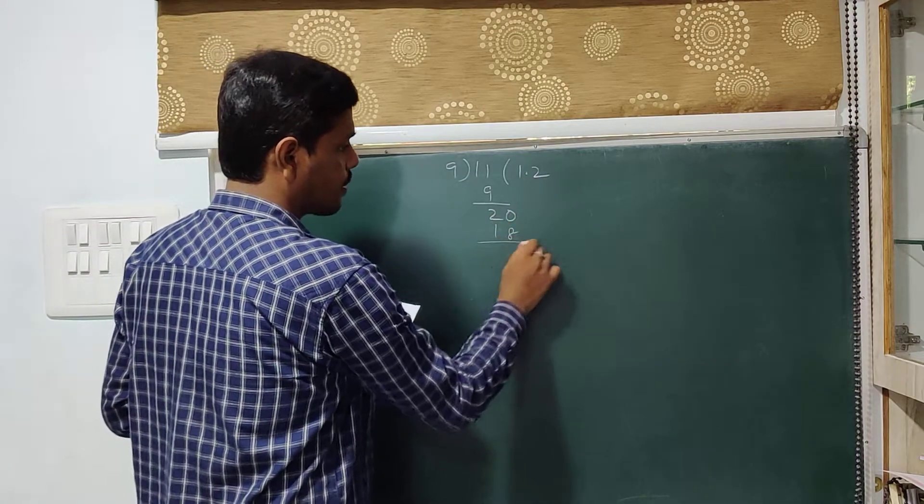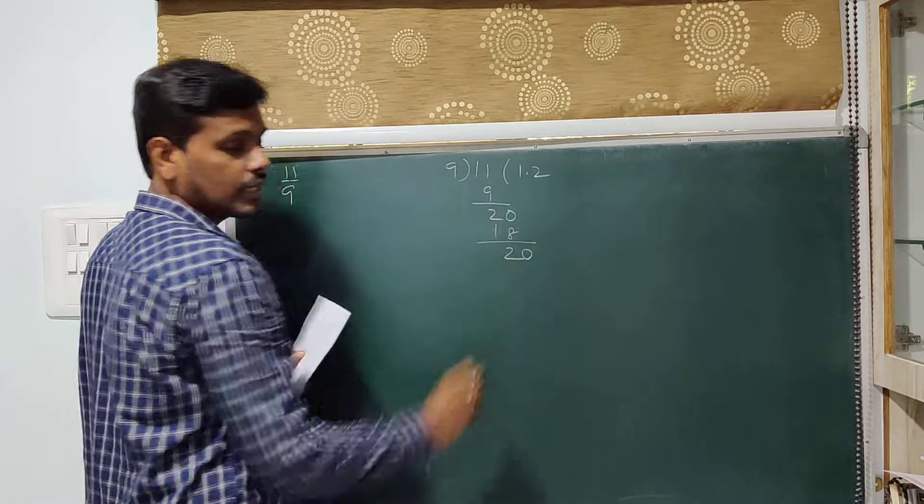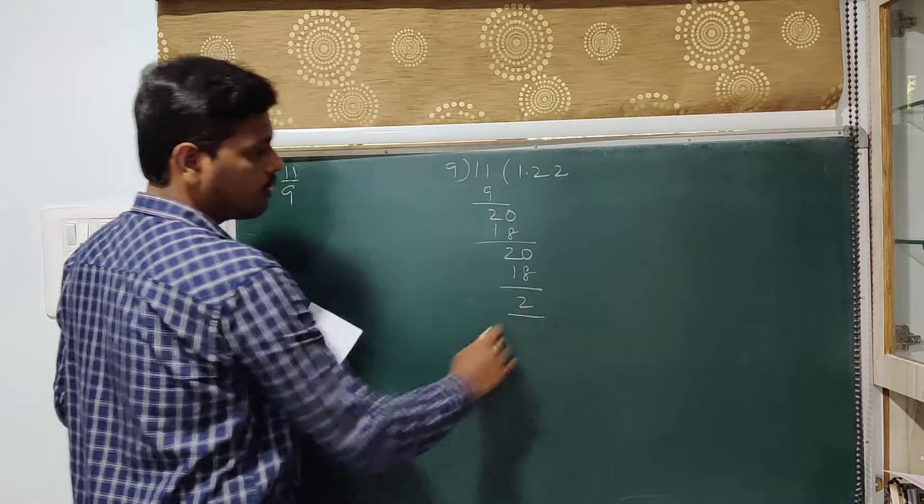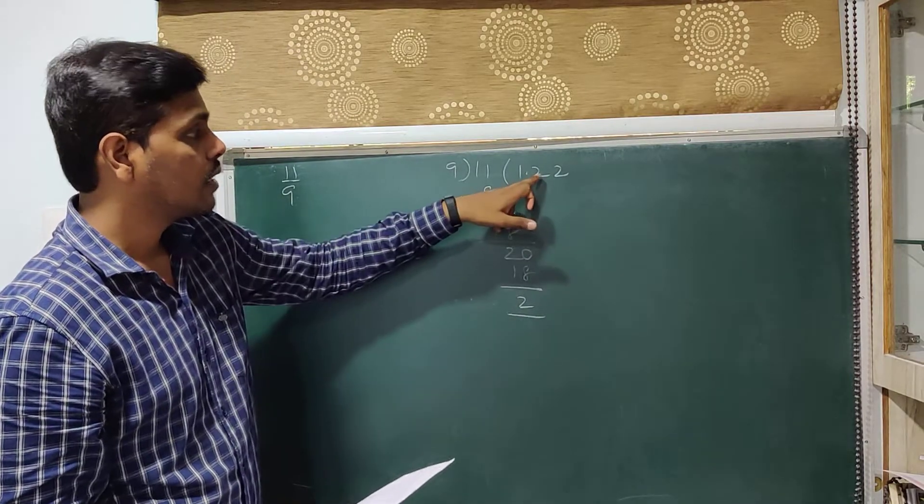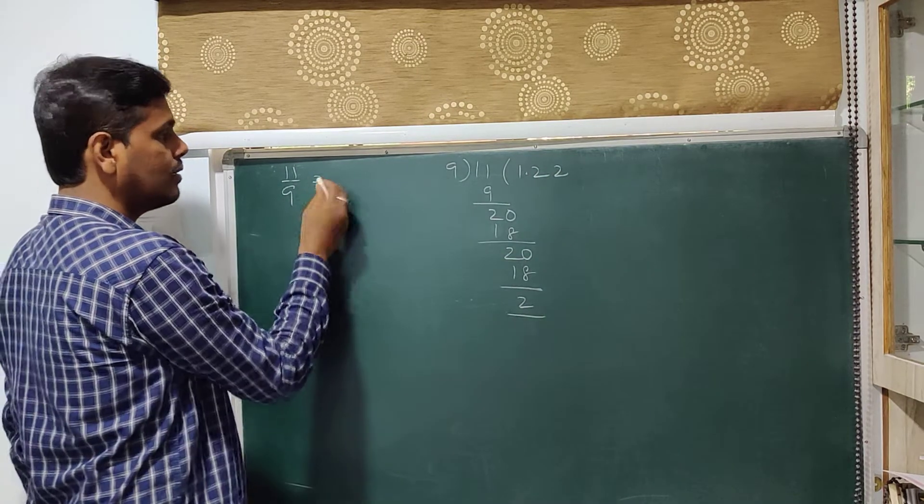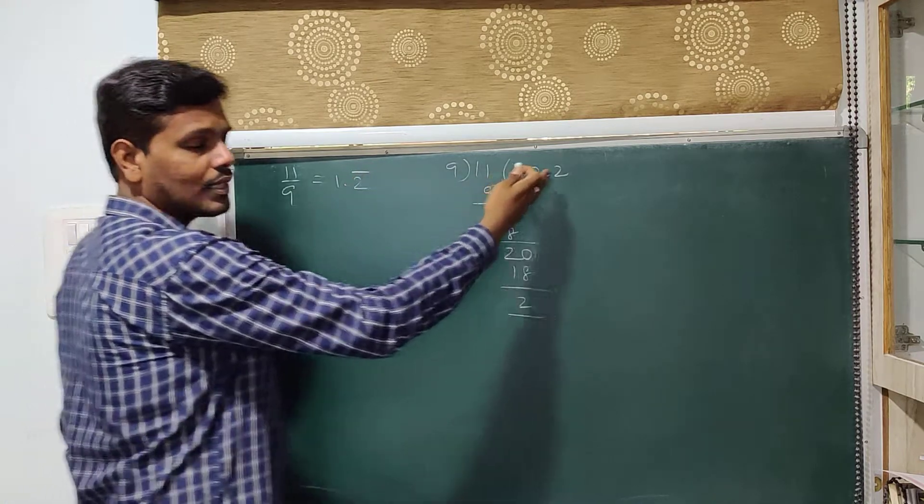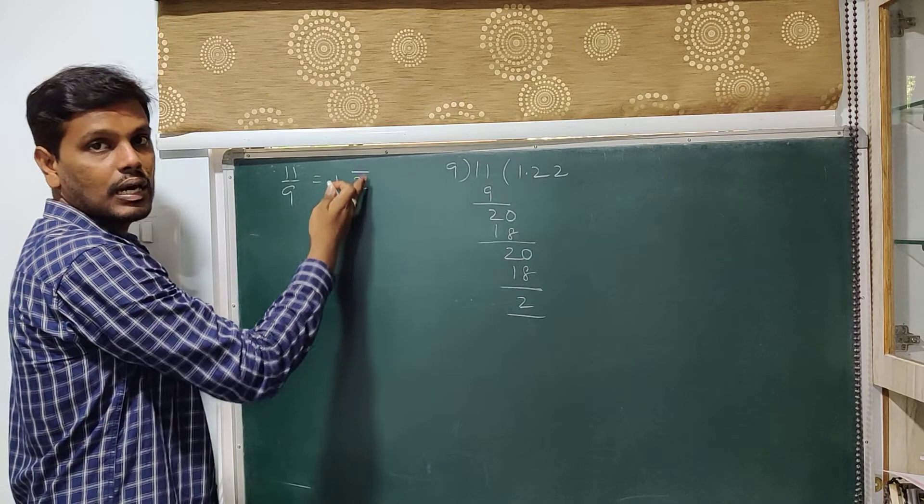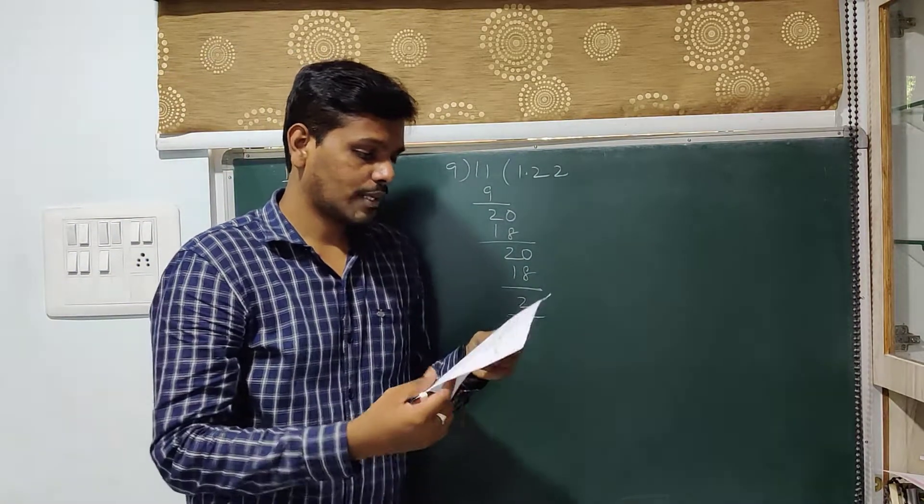Next, 9 times 2 is 18. Again the remainder is 2. You have a point so take 0. 9 times 2 is 18 and again 2. Now if you have seen, the remainder 2 keeps repeating and consequently here the digit 2 keeps repeating. Therefore we can say that 11 by 9 is equal to 1.2 bar. Instead of writing 2, 2, 2, 2 so on and so forth, I can write 1.2 bar. That bar indicates that the 2 is repeating continuously.